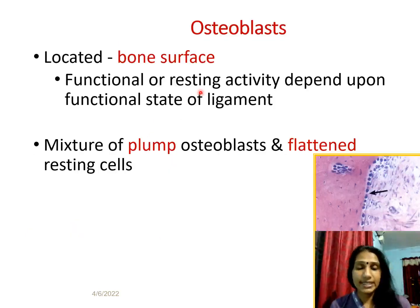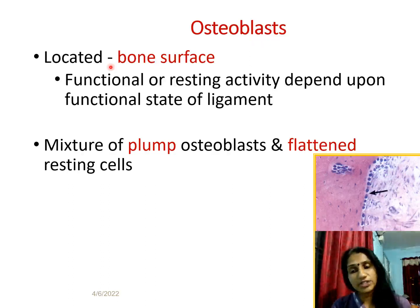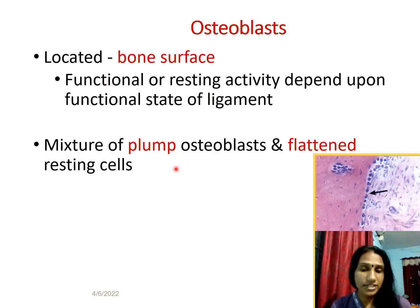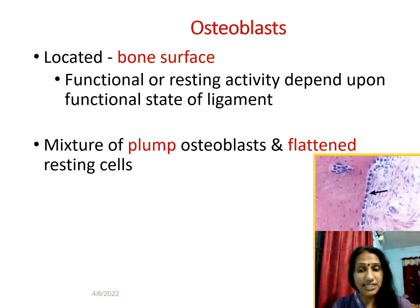Osteoblasts are cells which synthesize bone and are usually seen on the bone surface. A functional osteoblast is a plump cell, while a resting osteoblast is a flattened cell on the surface of the bone.